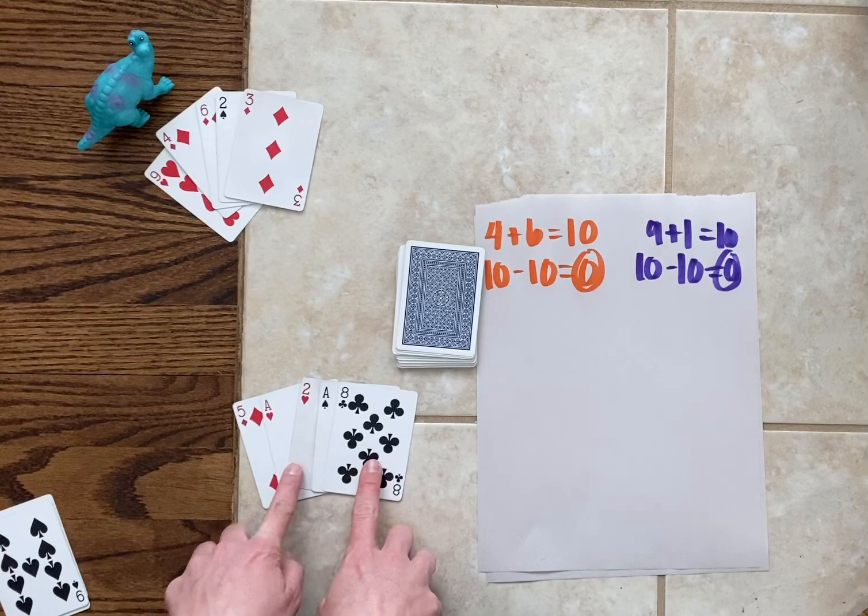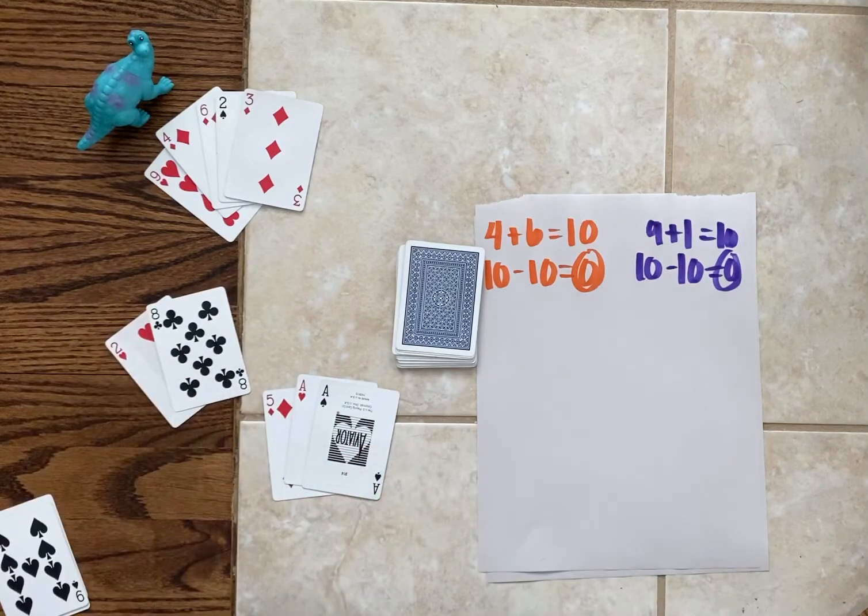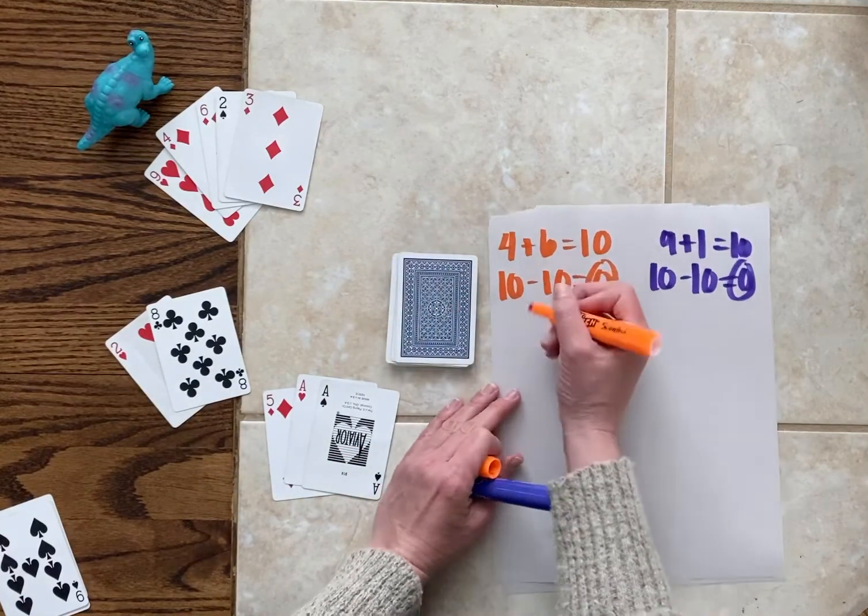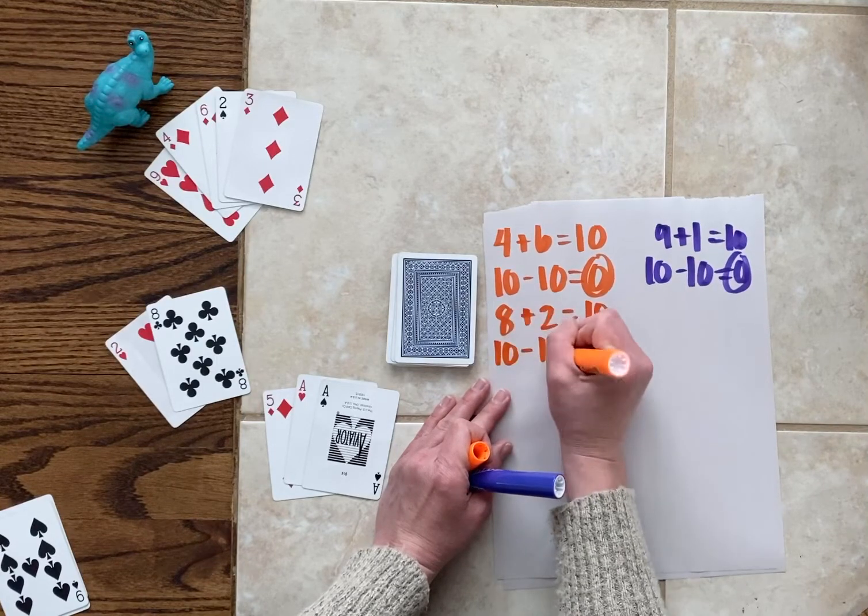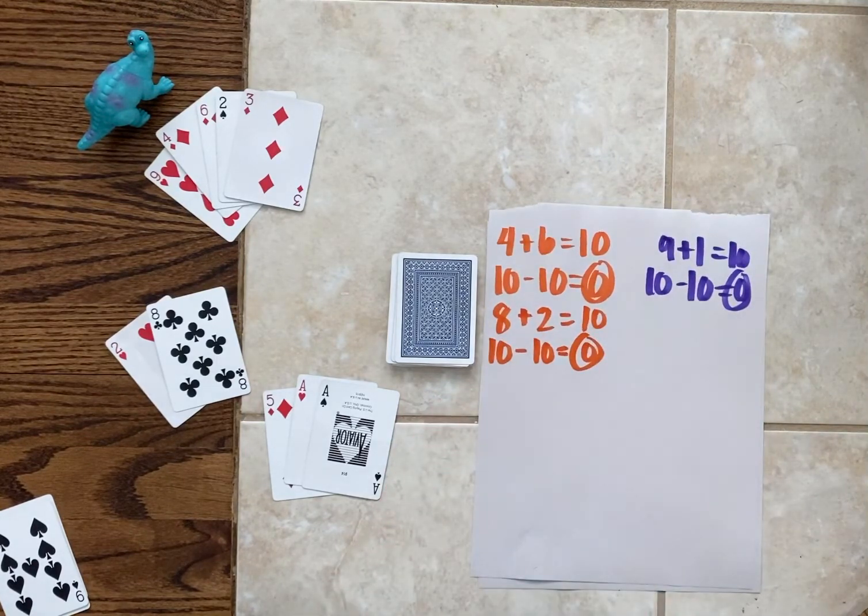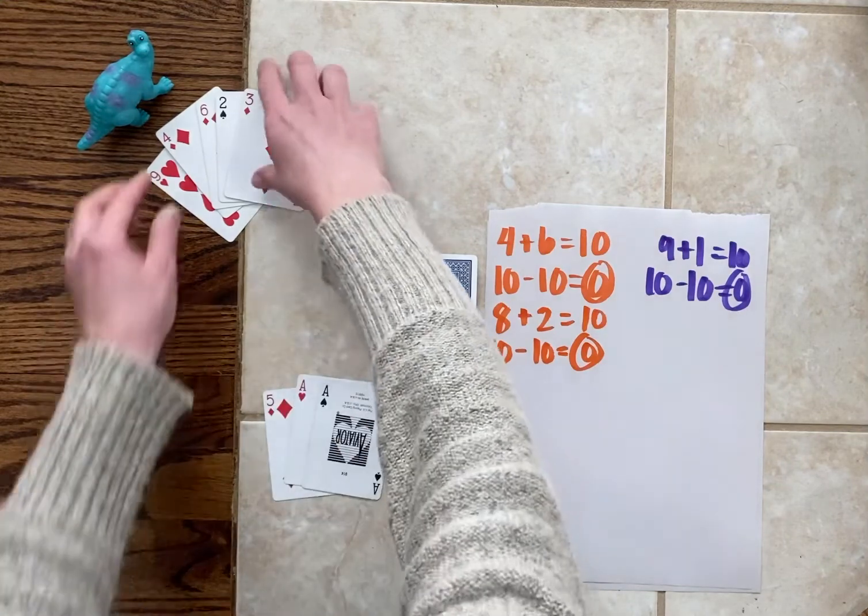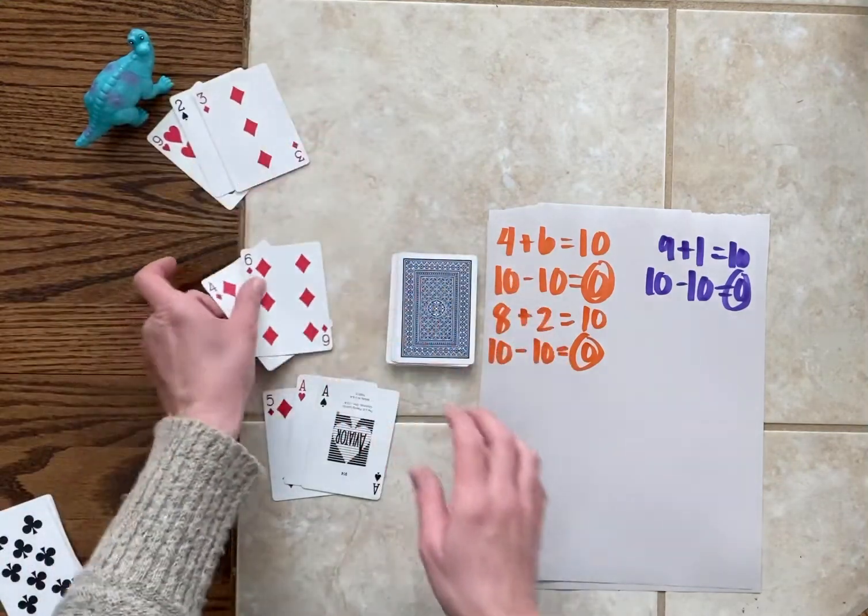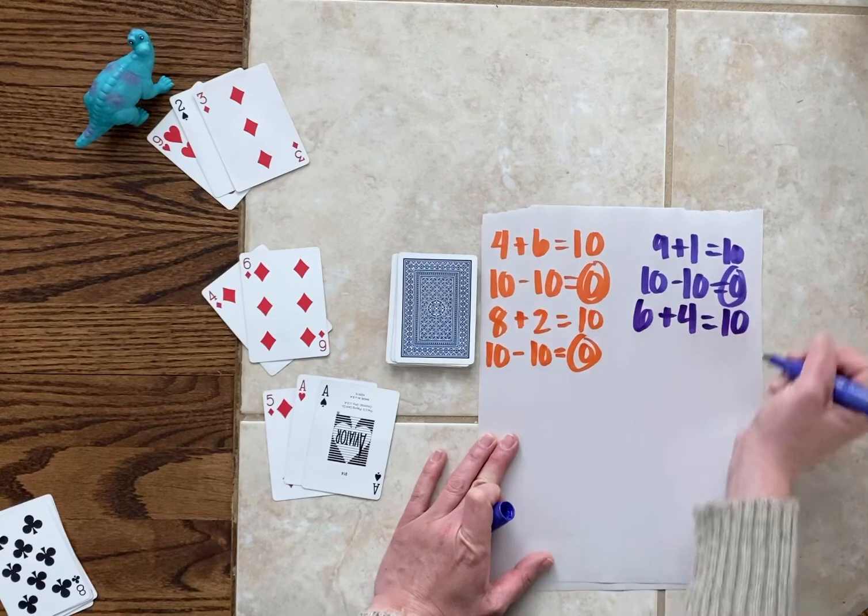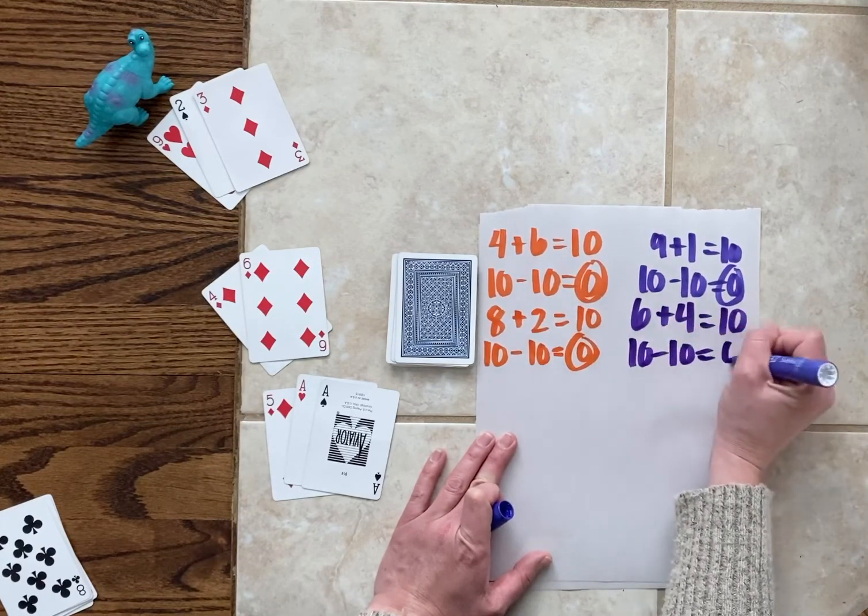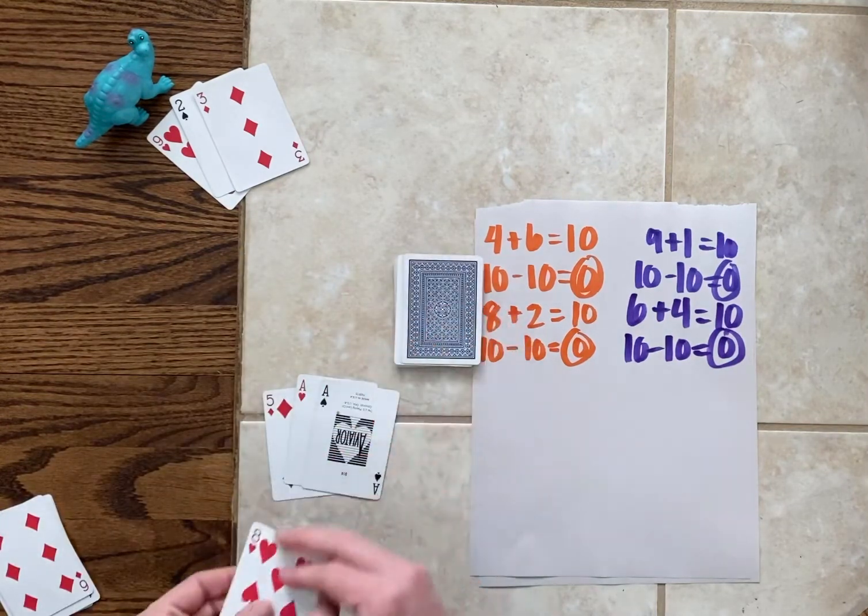So I see an eight and a two. Those two go together to make 10. So I'm going to record my equation. Eight plus two is 10. And that is zero away from my target number because it is my target number of 10. Now it's dinosaur's turn. So dinosaur has a six and a four. So dinosaur might decide to use those two together. And his equation would be six plus four is 10. That is also zero away from the target number. So right now we're still tied with a score of zero. We would each get two more cards.